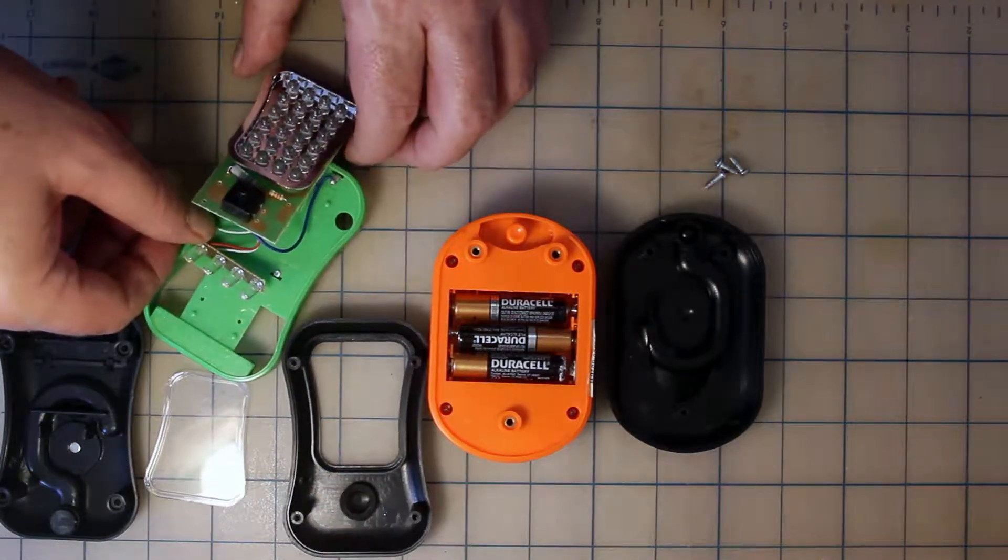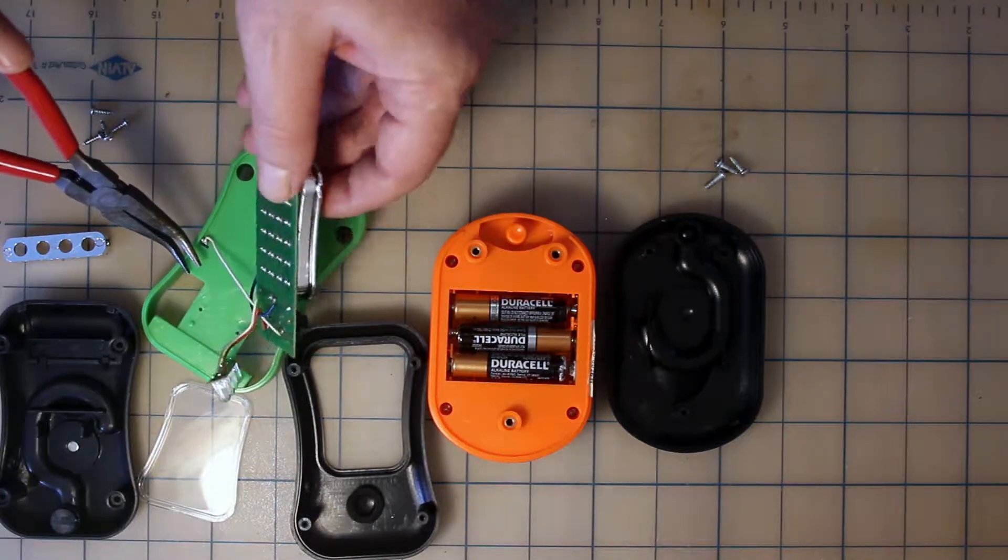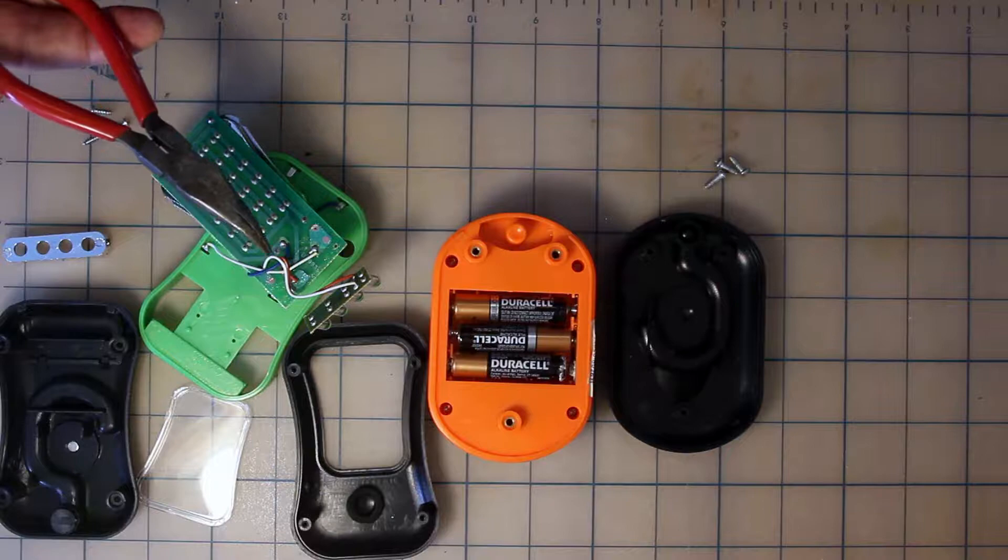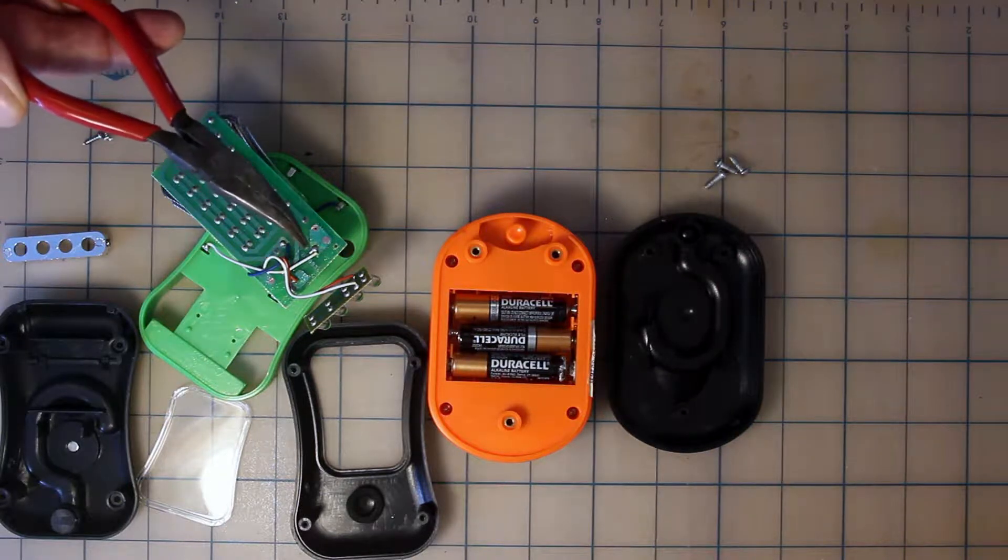All of the LEDs are arranged in rows with parallel connections and both boards share a common ground. Four screws hold the entire assembly together. Simple enough.